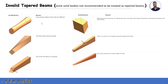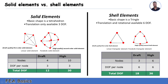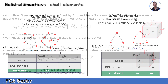Here is a comparison between solid elements and shell elements. Solid elements have a basic shape of tetrahedral, while shell elements are triangular. Solid elements have only 3 degrees of freedom, whereas shell elements have 6 degrees of freedom. Both solid and shell mesh support draft quality and high quality options.